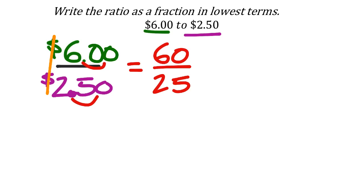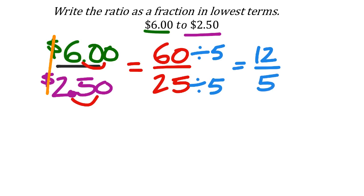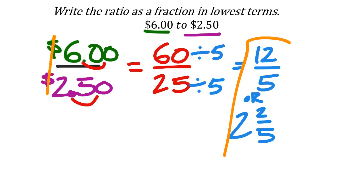With 60 over 25, I know I can divide both by 5 — both numbers end in 0 or 5, which confirms divisibility by 5. So 60 divided by 5 is 12, and 25 divided by 5 is 5. Since 12 and 5 share no common factors, 12 over 5 is our simplified answer. As a mixed number that's two and two-fifths, though on the homework they likely want the improper fraction 12 over 5.